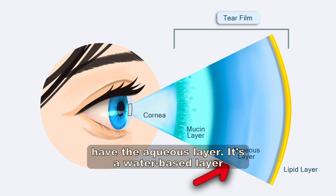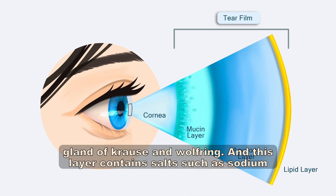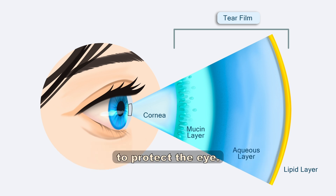In the middle you have the aqueous layer. It's a water-based layer produced by our lacrimal gland and the accessory glands of Krause and Wolfring. This layer contains salts such as sodium, potassium, and chloride, as well as proteins and antimicrobial substances that help to protect the eye.